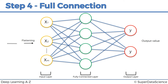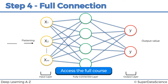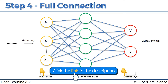Here we've got the input layer, a fully connected layer, and an output layer. The fully connected layer in artificial neural networks we used to call hidden layers. We're calling them fully connected layers here because, while they are hidden layers, they're a more specific type. In artificial neural networks, hidden layers don't have to be fully connected, whereas in convolutional neural networks we use fully connected layers.